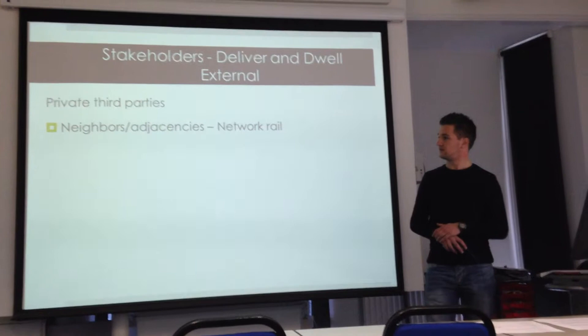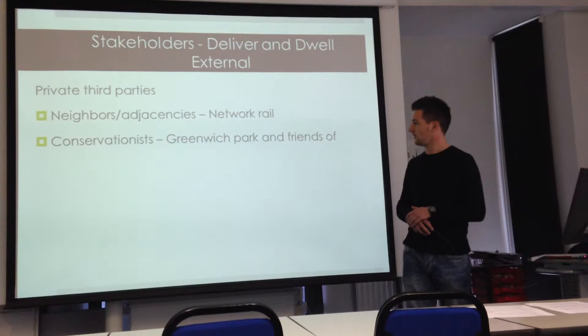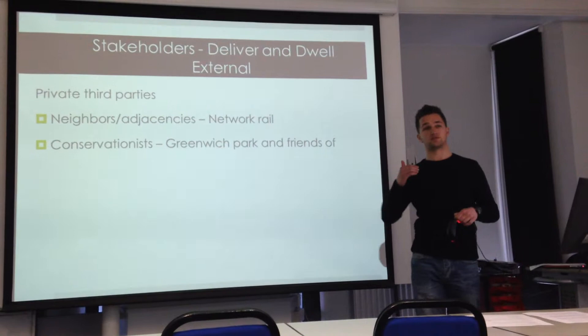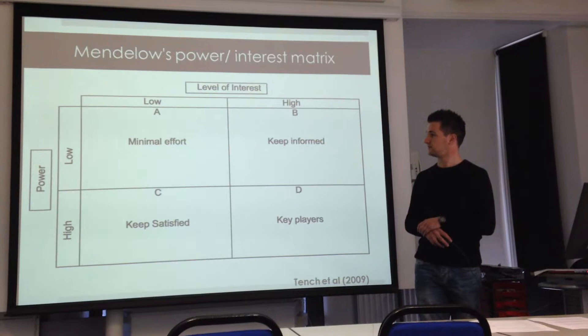Private third parties include neighbours — Network Rail is directly adjacent to the site and there have been a few issues with them, though these are now resolved. Conservationists include Greenwich Park and Friends of Greenwich Park. The site is quite close to the park, so the building must be in keeping, and there are listed buildings to the back of the site, so conservationists remain a key stakeholder at this stage.